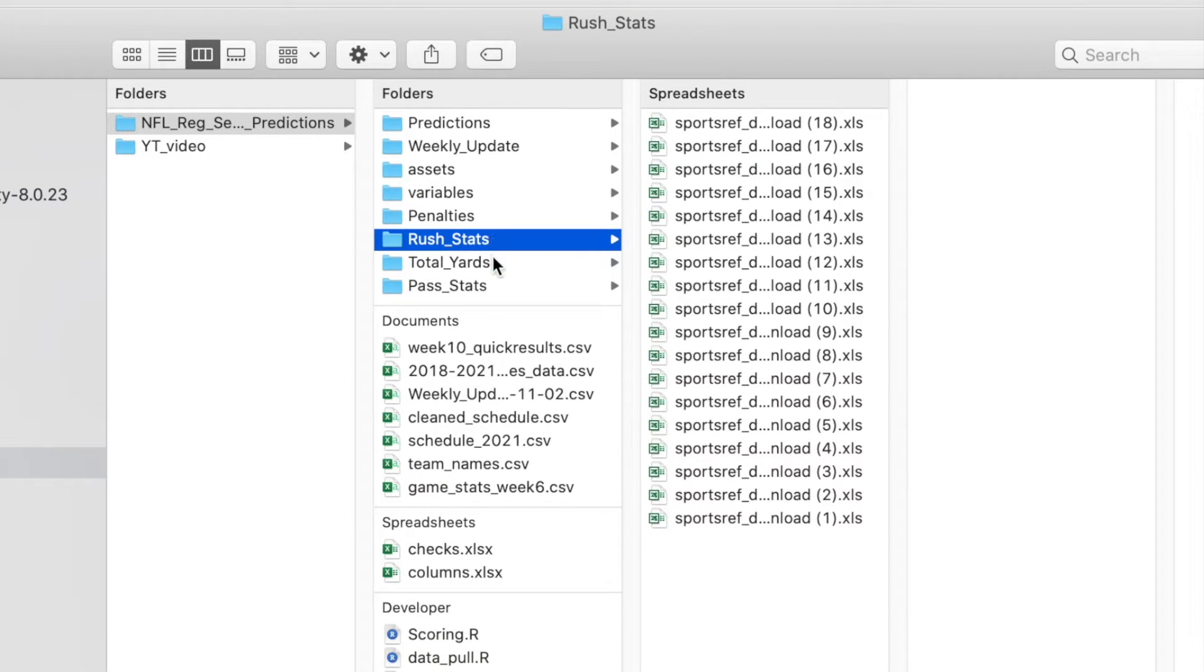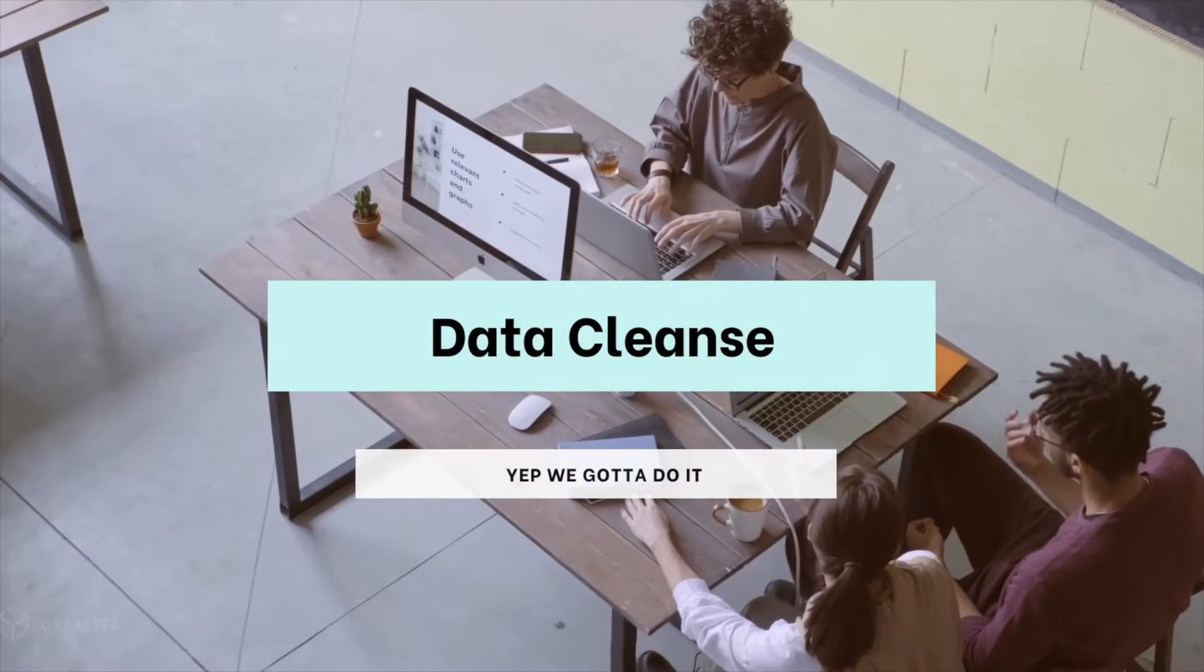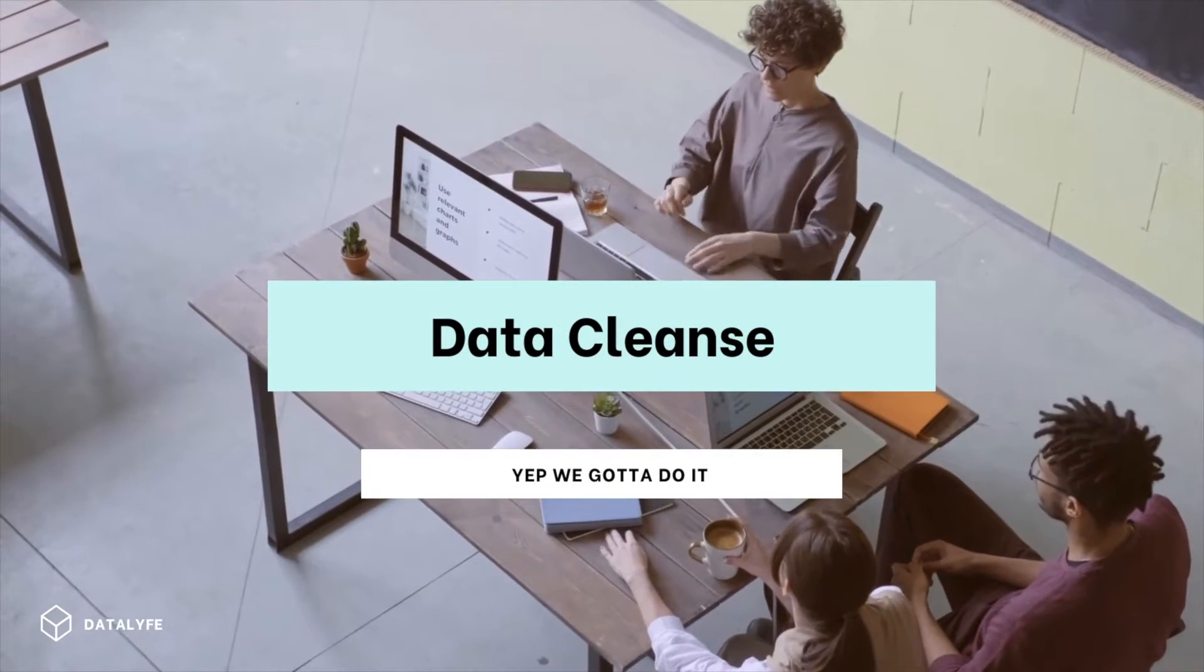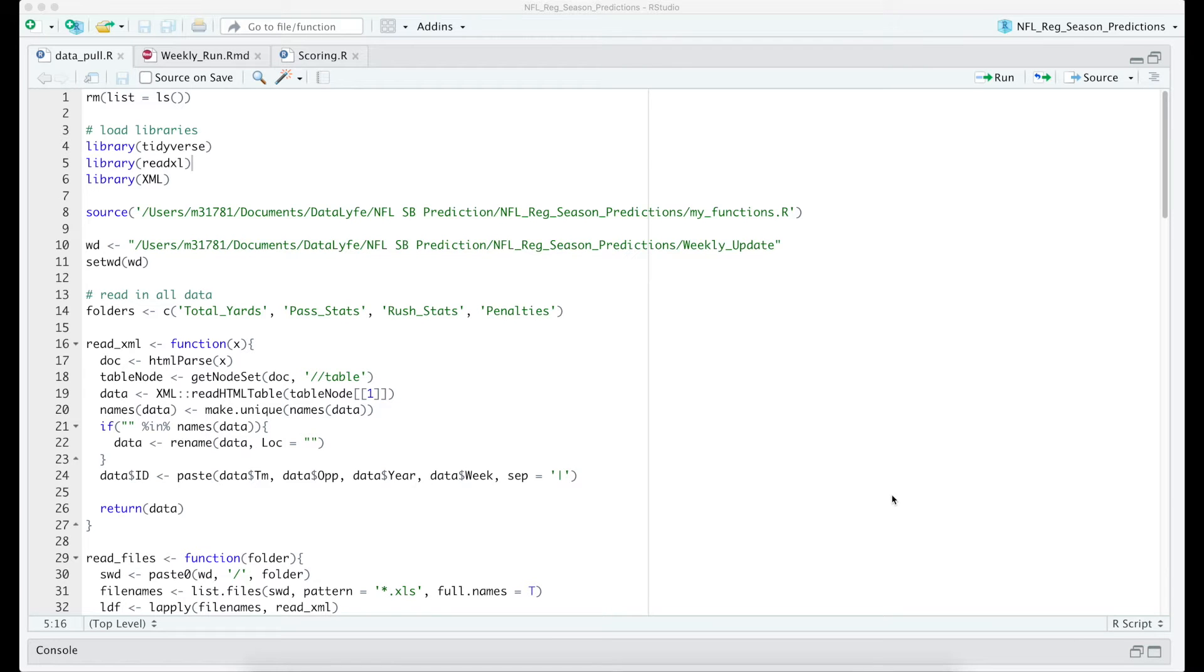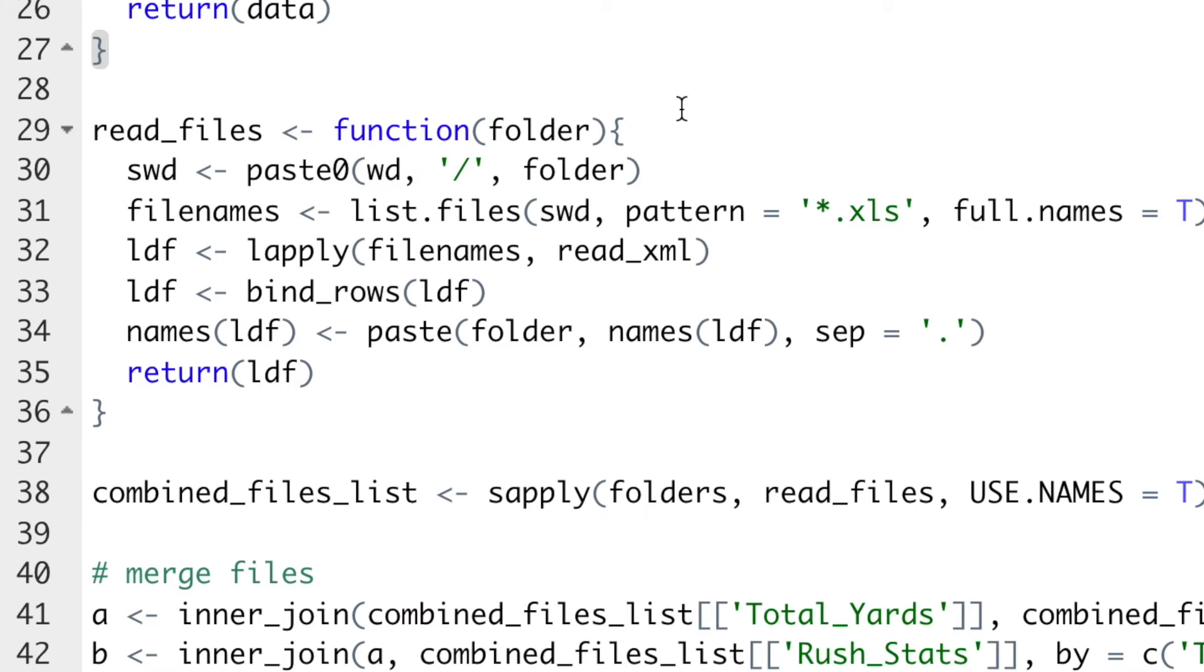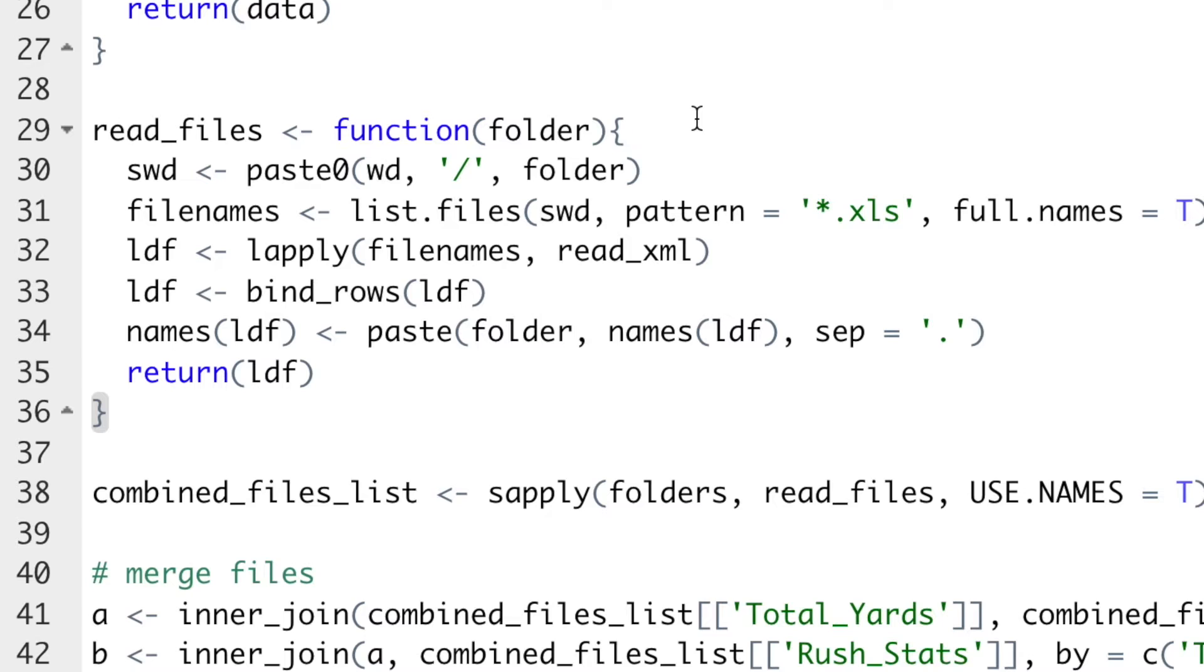Now it's time to build a script to build our data set. Now that we have our data source, we can build a script to combine all the files into our data set. Here I've built a function to read in an XML file into our R environment and a function that will read in all the files in a folder combined. We use the apply function to read in all the files from all the folders and store them combined into four separate data frames.